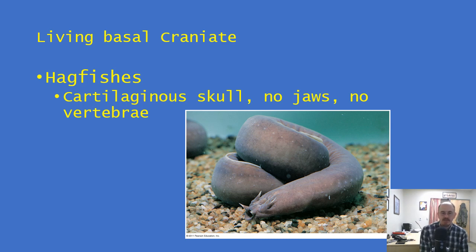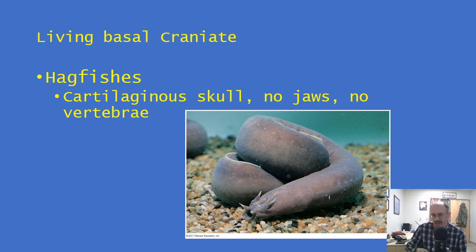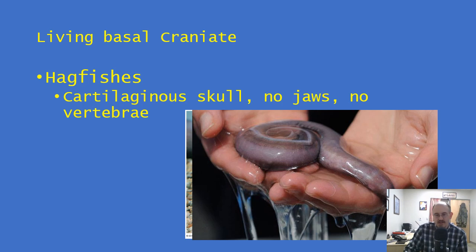The next group is the first member of the clade of craniates. Craniates means organisms with a skull. This is a hagfish — it has a cartilaginous skull, so a skull made of cartilage. It does not have jaws, and it does not have vertebrae, so it's not a vertebrate yet. But we have a skull made of cartilage with no jaw. Jaws have not evolved yet when this group split off. One really cool feature about hagfish is their defense mechanism: when you handle them, they produce copious amounts of mucus.